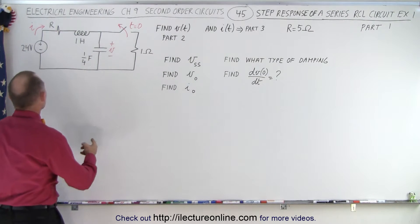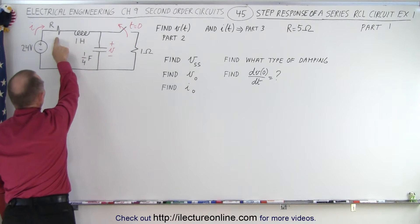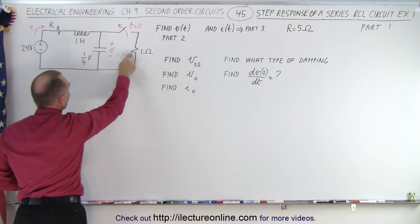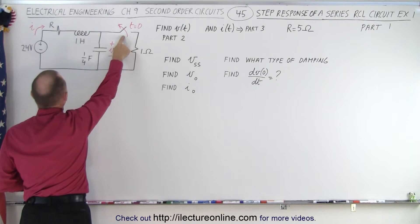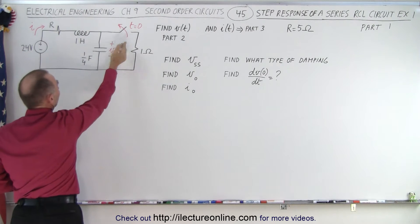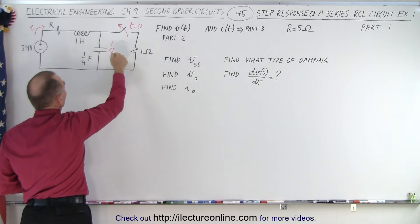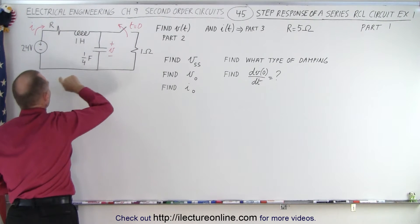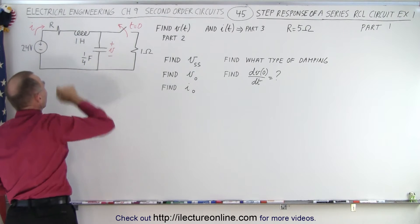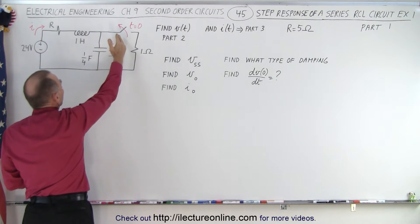So here we have a circuit that has two resistors. Here we have a first resistor, an inductor, and a capacitor. We have a second resistor and a switch. We have a voltage source. Notice that at time equals zero the switch opens, which isolates this resistor from the rest of the circuit, and now we have the source driving current through the circuit.